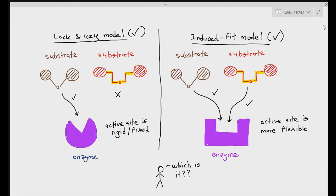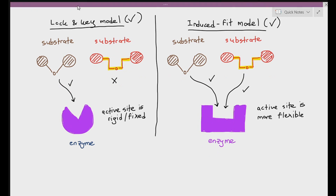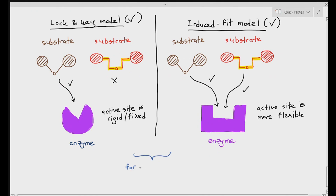Some students will ask: which model does the enzyme follow — lock and key or induced fit? The honest answer is it can be both. Some enzymes may subscribe to the lock and key; some enzymes may prefer induced fit. It really depends on the type of enzyme. As students, you don't have to know which enzymes do lock and key and which do induced fit — you just have to know what each stands for and what the differences are. There are also similarities between the two models: when they react with the substrate, both form the enzyme-substrate complex, both lower the activation energy required for the chemical reactions, and once they convert the substrate into products, the enzymes are reusable — no matter which model they follow.